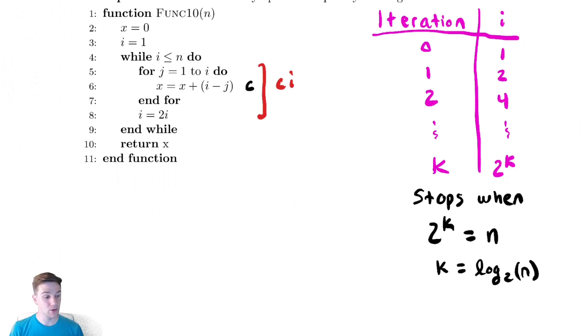And now this is where we need to be very careful. We know what values i takes on from our iteration table that we've created there. So the cost of the first iteration of the while loop would be c times i, but we know what i is on that first iteration of the while loop. It's one.